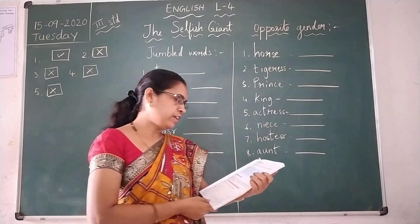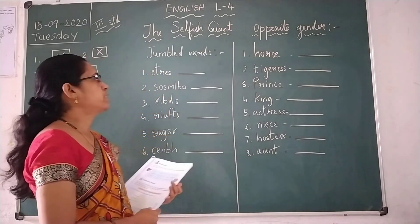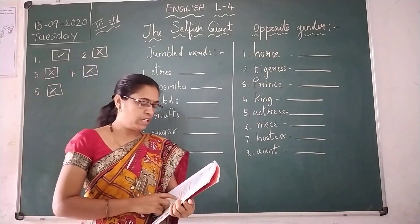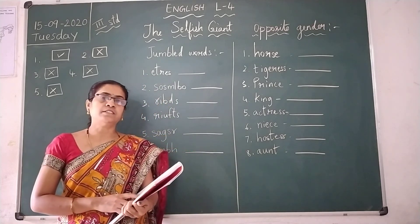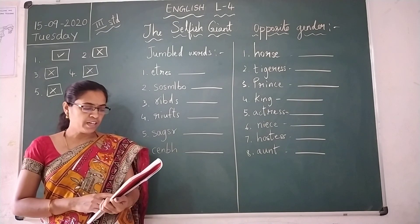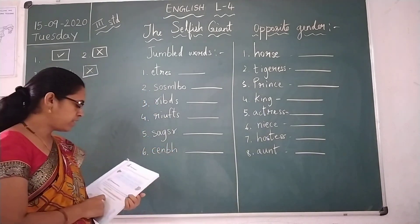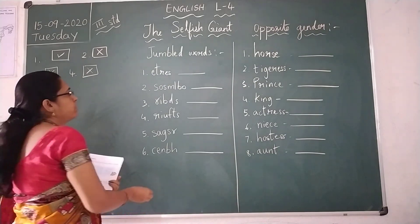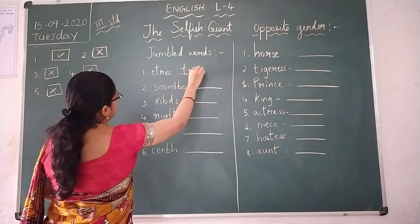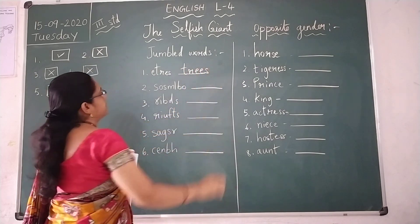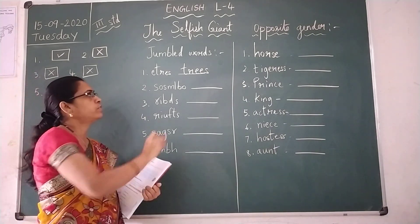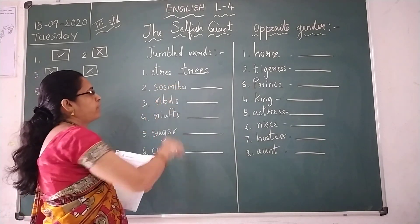Come to page number 43 — Words Smart. Jumbled words are given. Here are some jumbled words that you can relate with the garden. Unscramble them and write the answers. First one is T-R-E-E-S — trees. Second one is related to the garden — flowers will blossom.